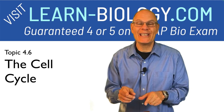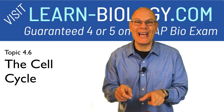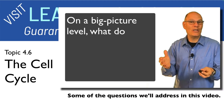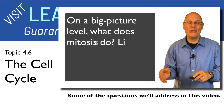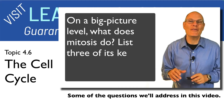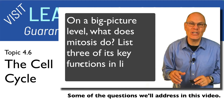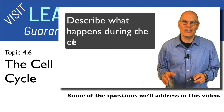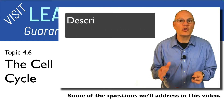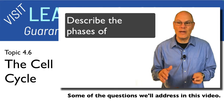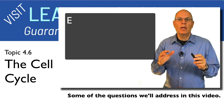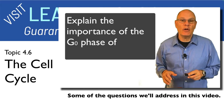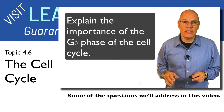Topic 4.6, the cell cycle. On a big picture level, what does mitosis do? List three of its key functions in living things. Describe what happens during the cell cycle. Describe the phases of mitosis. Explain the importance of the G0 phase of the cell cycle.